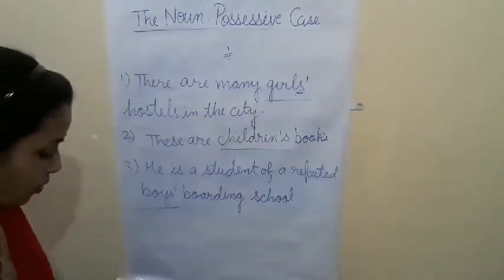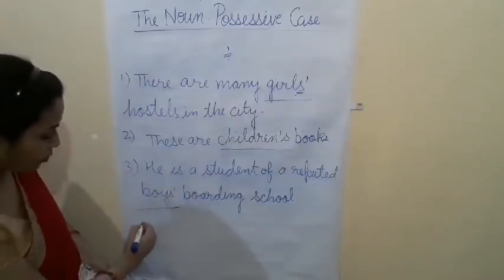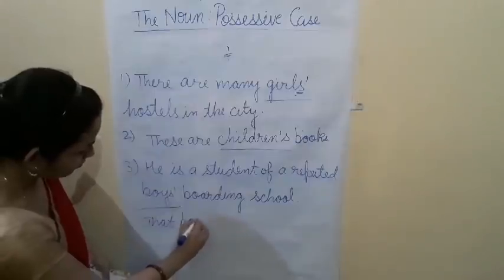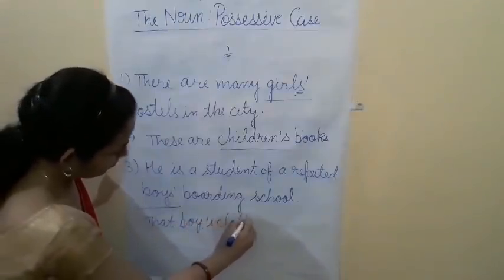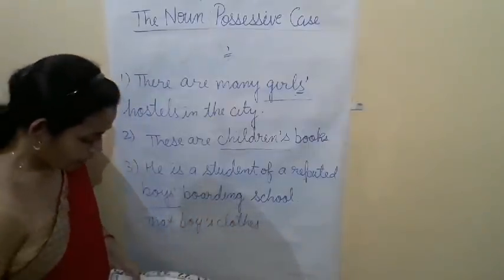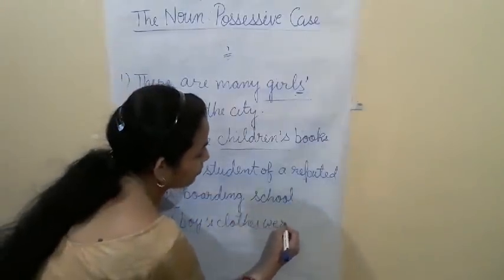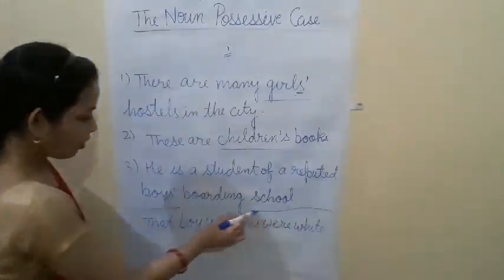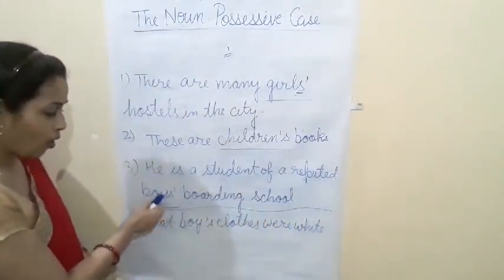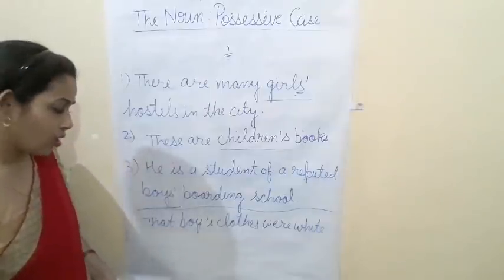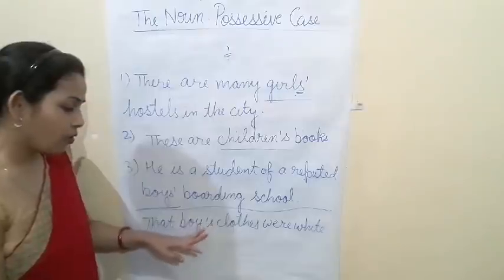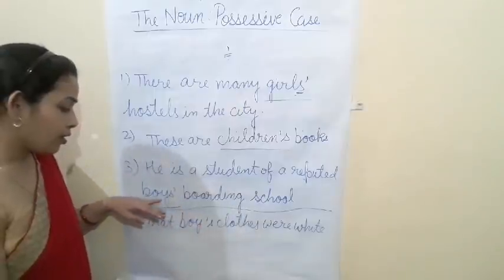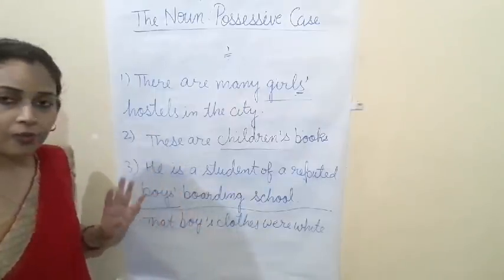Compare singular and plural: 'That boy's clothes were white' uses apostrophe sign with S for singular. For plurals like 'boys', we follow apostrophe sign only. We must keep in mind that double S we don't write.